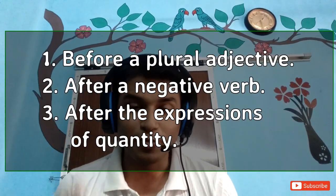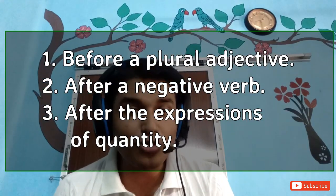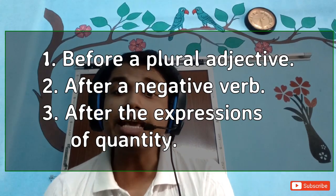Now that you have some examples and are interested in using partitive in your own sentences, let me introduce the exceptions. In grammar, we often have more exceptions than rules! In some special cases, we will not use partitive but will use the preposition 'de' before consonants and 'de apostrophe' (d') before vowels or vowel sounds. There are three such cases: number one, before a plural adjective; number two, after a negative verb; number three, after expressions of quantity.